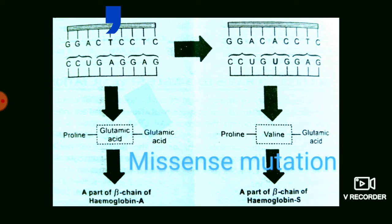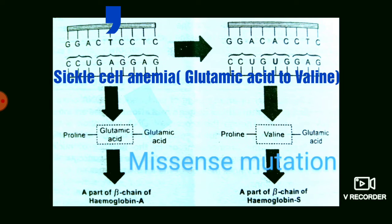One well-known example of missense mutation is sickle cell anemia. In sickle cell anemia, it is caused by a single base substitution at the sixth position — the sixth codon of the beta chain of hemoglobin. In normal hemoglobin A, the sixth codon in DNA is CTC, and GAG in the mRNA, which codes for glutamic acid.